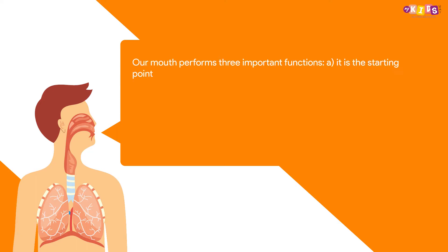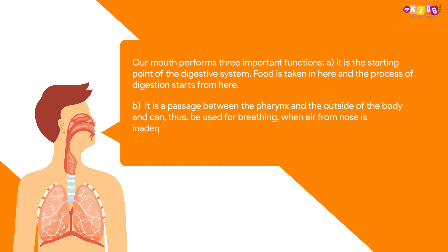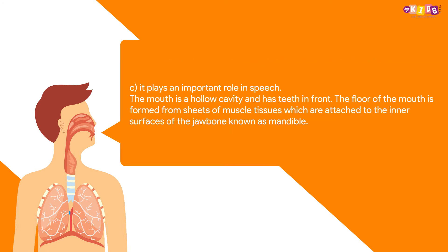Our mouth performs three important functions. A) It is the starting point of the digestive system; food is taken in here and the process of digestion starts from here. B) It is a passage between the pharynx and the outside of the body, and can thus be used for breathing when air from the nose is inadequate, e.g. during vigorous exercise. C) It plays an important role in speech.